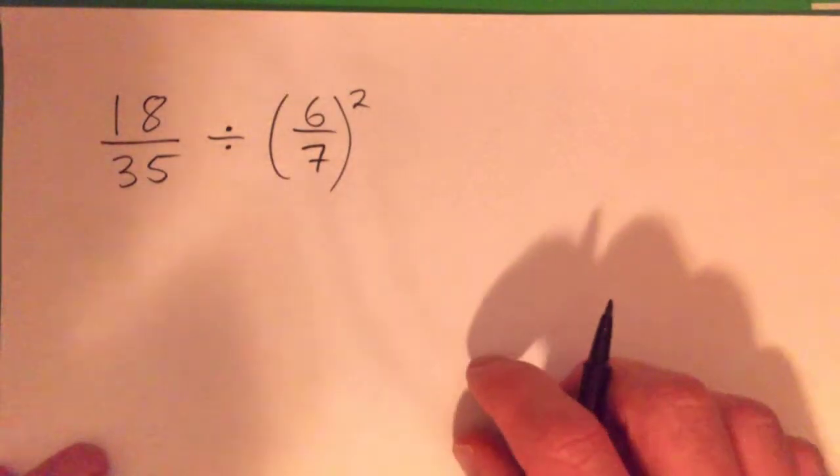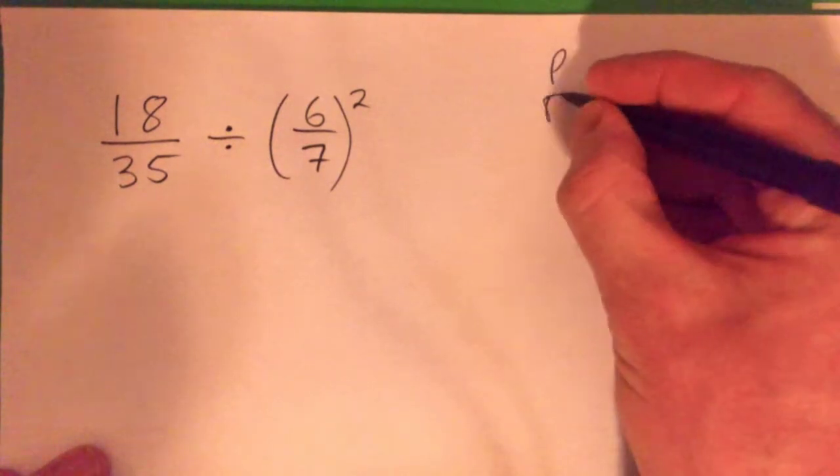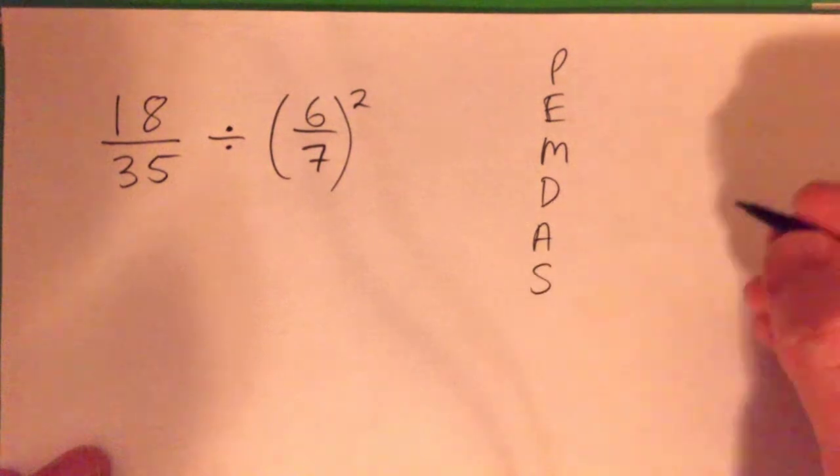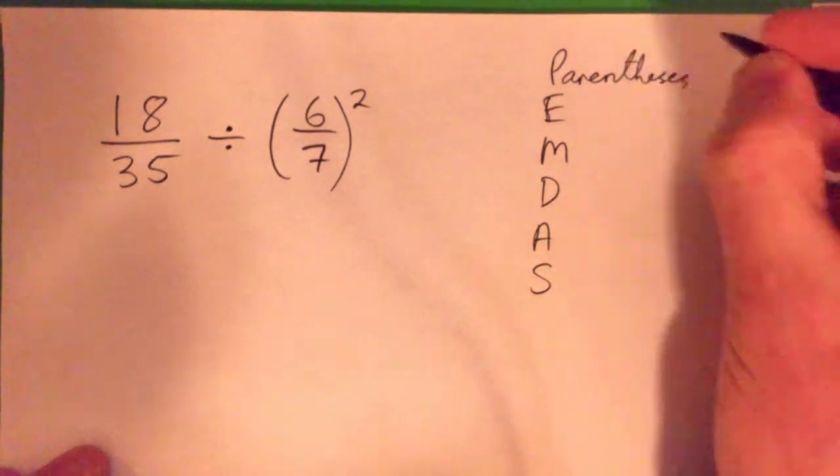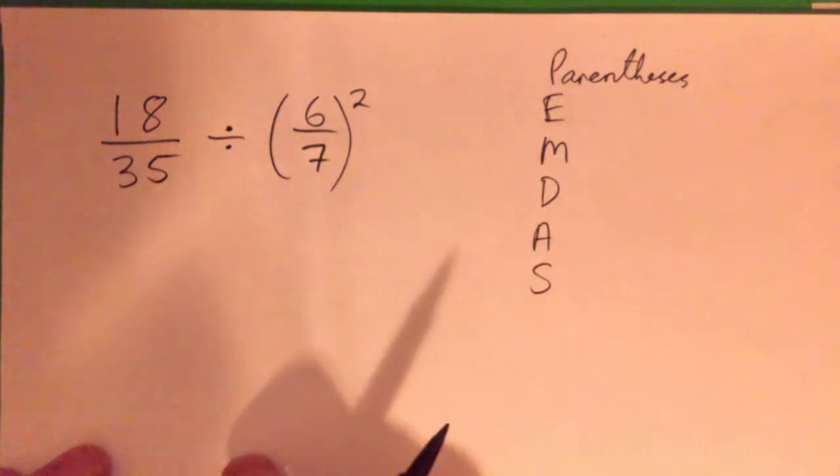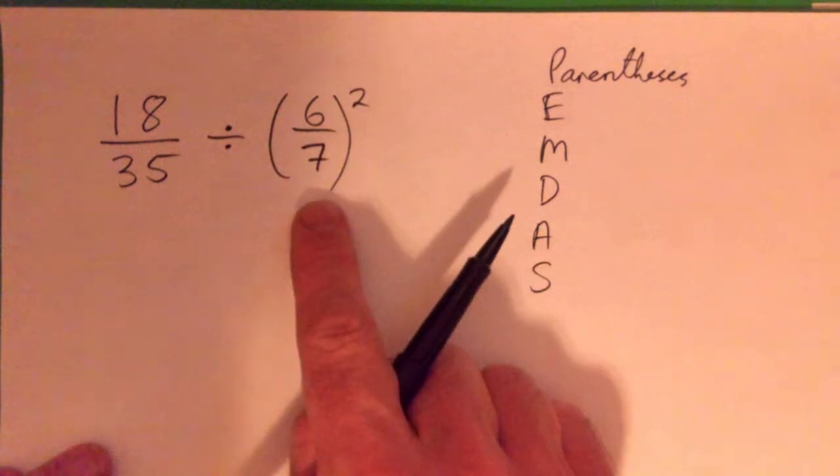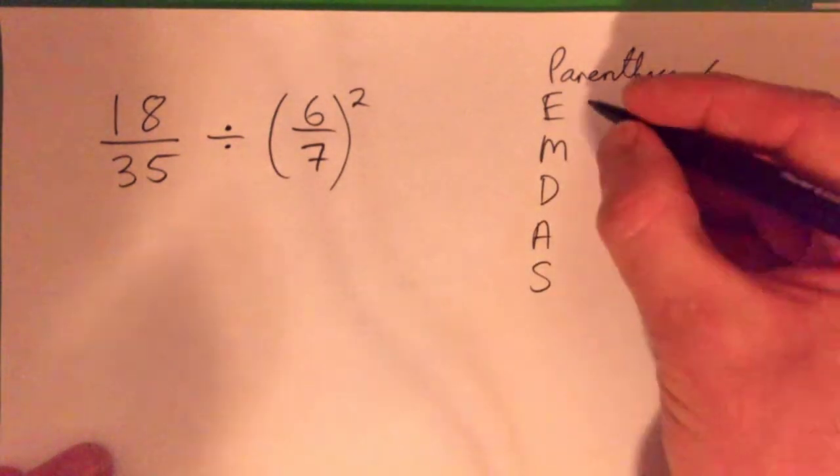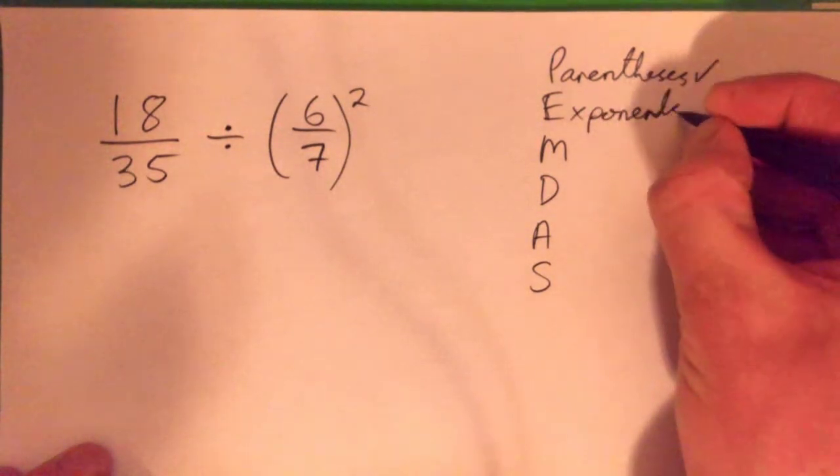Alrighty, so we've got to calculate this and we're going to use the order of operations PEMDAS. We've got to think about parentheses first. Have we got any parentheses? You've got some here but there's nothing happening inside it, so we can just ignore that. Do we have exponents?